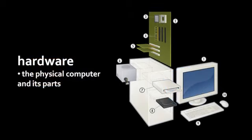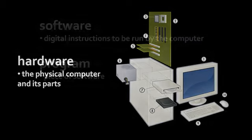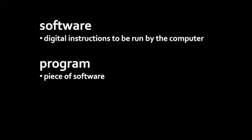The term hardware simply refers to any physical component of a computer system. If you can hold it in your hand, it's hardware. Software, in contrast, is not physical. Software is simply the instructions which are executed by the computer.